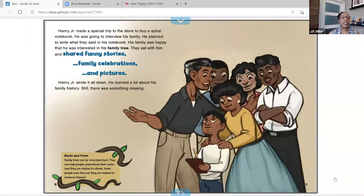Henry, Jr. made a special trip to the store to buy a spiral notebook. He was going to interview his family. He planned to write what they said in his notebook. His family was happy that he was interested in his family tree. They sat with him and shared funny stories, family celebrations, and pictures. Henry, Jr. wrote it all down. He learned a lot about his family history.